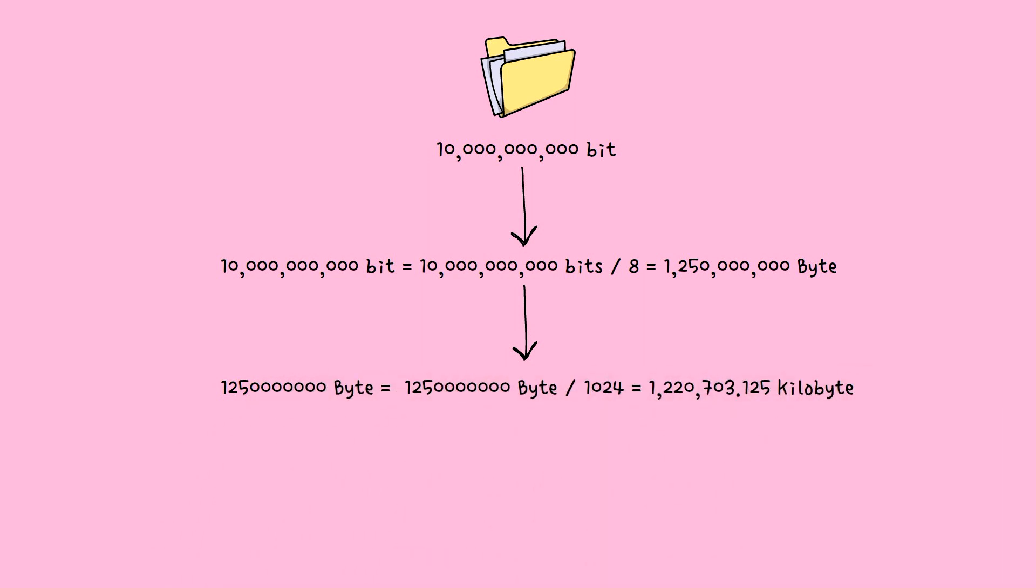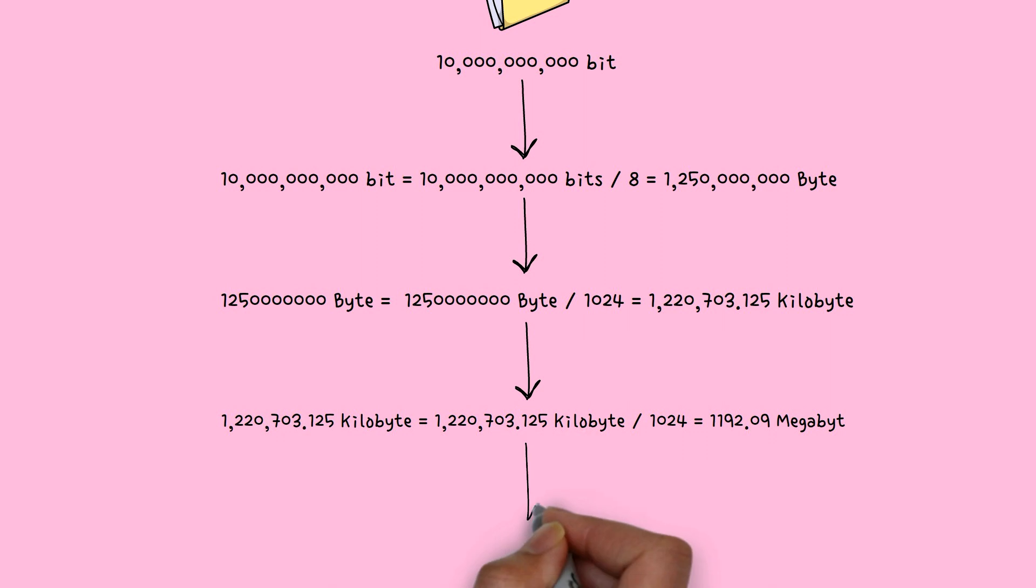Which will give us 1 billion kilobytes. Let's convert this into megabytes and then gigabytes. So 1 billion kilobytes divided again by 1024 will give us 976,000 megabytes. And lastly, let's divide that one more time by 1024, which will finally give us 1.16 gigabytes. Really cool!